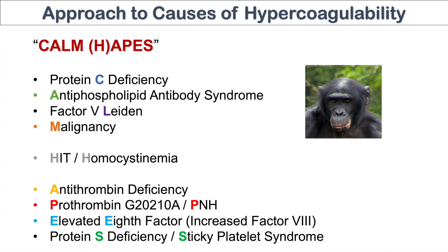So those are the category of causes of hypercoagulability in veins and arteries. Again: protein C deficiency, antiphospholipid antibody syndrome, factor V Leiden, malignancy, HIT or heparin-induced thrombocytopenia, homocystinemia, prothrombin G20210A, paroxysmal nocturnal hemoglobinuria, elevated factor VIII, and protein S deficiency and sticky platelet syndrome. Remember that endothelial injury and venous stasis can also lead to clots, but with regards to hypercoagulability, these are the causes you want to think about.